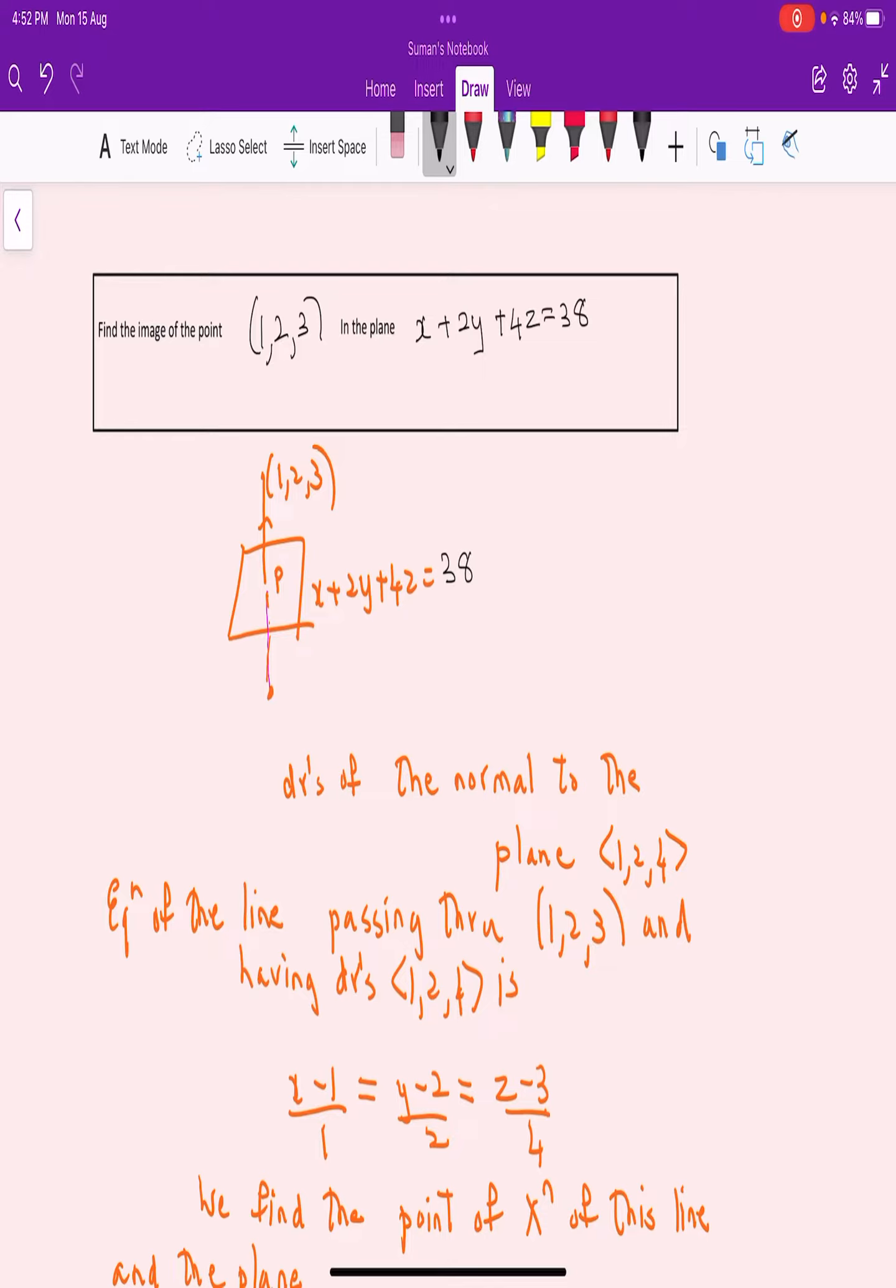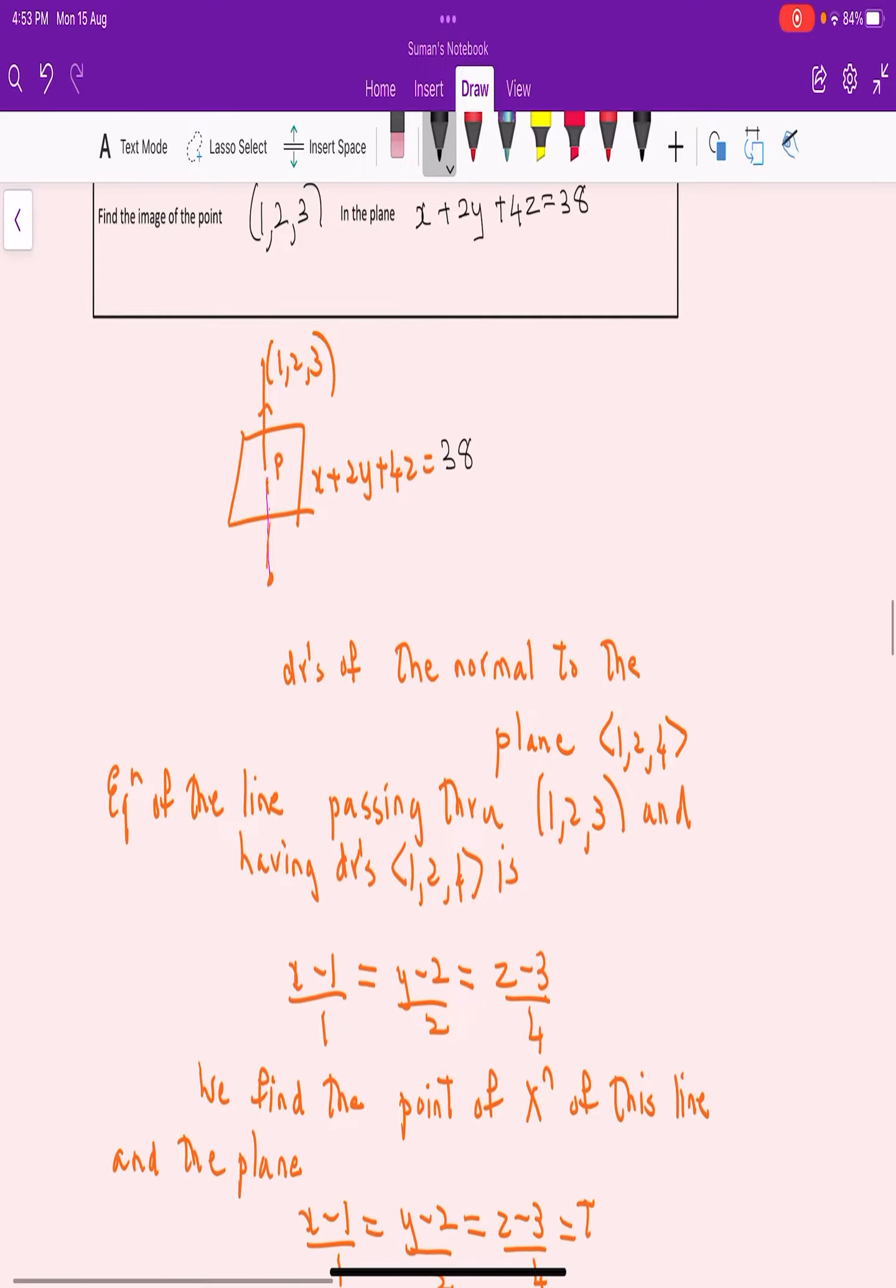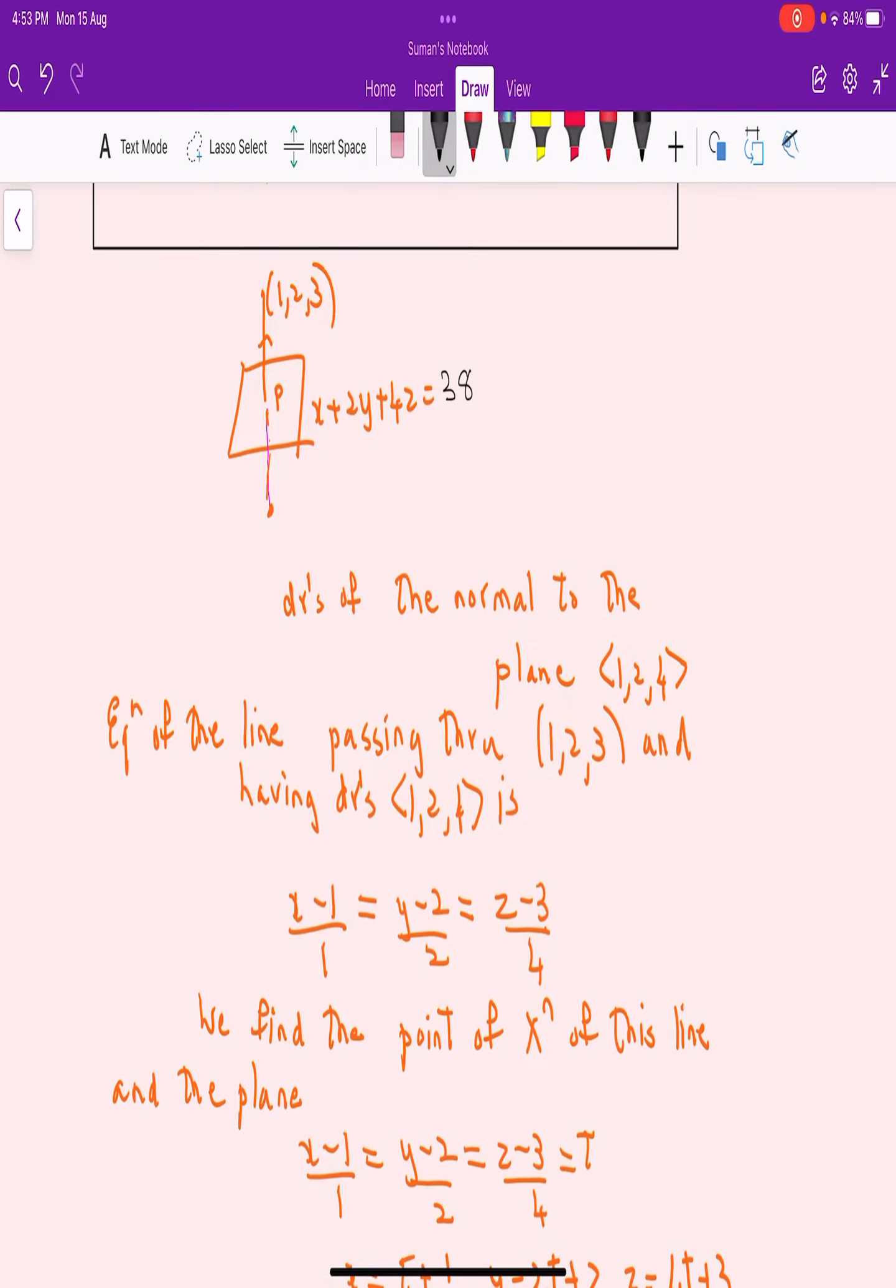We first find the direction ratios of the normal to this plane, which is 1, 2, 4. The equation of the line passing through (1, 2, 3) and having direction ratios 1, 2, 4 will be (x-1)/1 = (y-2)/2 = (z-3)/4, which is basically the normal.